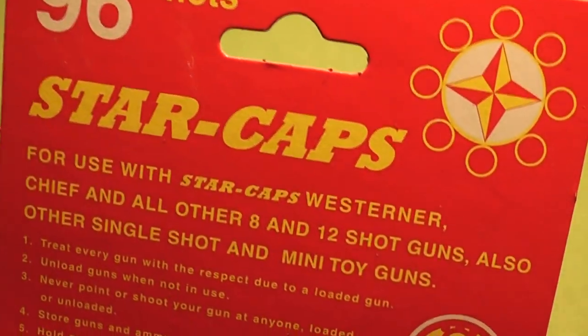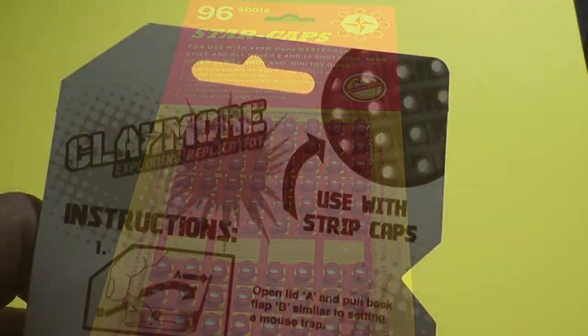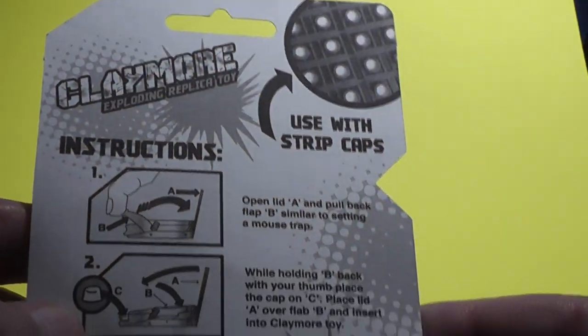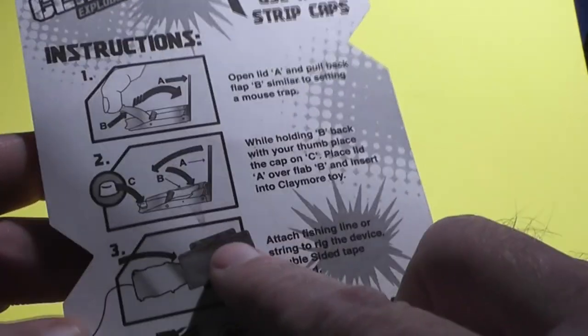These utilize just those red plastic caps that you can get at toy stores. And I've even seen them at Sportsman Warehouse. On the back of the package, we can see that it has instructions on how to set it up and everything.